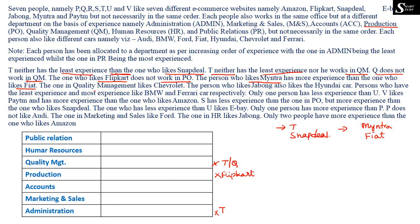The one in Quality Management likes Chevrolet, so we substitute Chevrolet directly into Quality Management. The person who likes Jabong also likes Hyundai car. We note this but cannot substitute yet since we don't know the exact placement of Jabong or Hyundai.